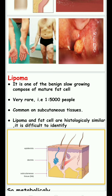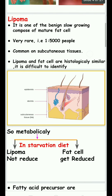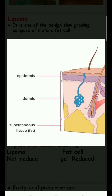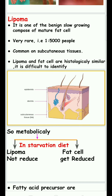Lipoma is very rare — among 5,000 people, one person gets affected. It is very common in subcutaneous tissue because subcutaneous tissue contains more fat. Histologically, lipoma and normal fat cells appear similar, making it difficult to identify.